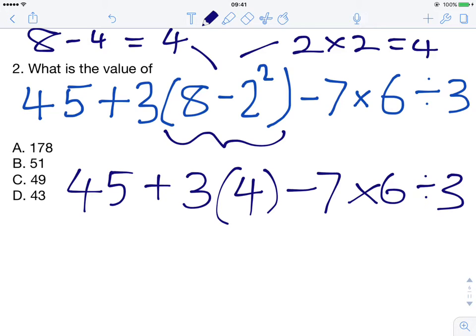As we remember, we have division, multiplication, addition and subtraction. Let's look to see if there's anything requiring division and do that next. We see we have 6 divided by 3, which is equal to 2. We can get rid of that and replace it with 2. We've simplified this a bit more.